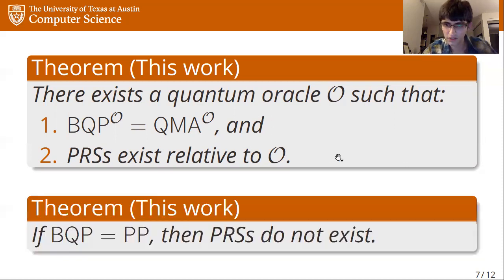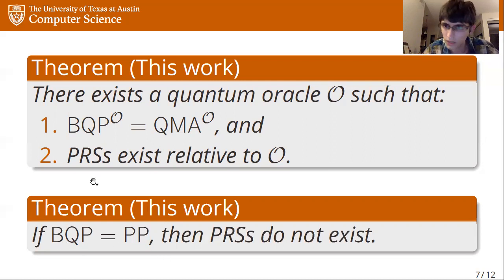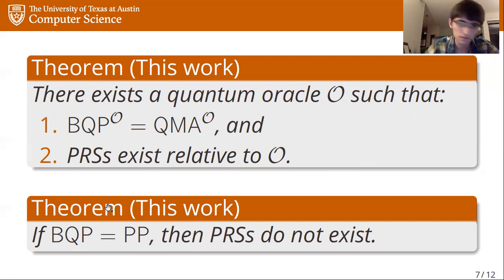That brings us to the second result, which shows that yes, we can place some upper bound: if BQP equals PP — meaning if we can efficiently solve #P-complete problems on a quantum device — then pseudorandom states do not exist. This also holds relative to oracles. So that's the best upper bound we know of.